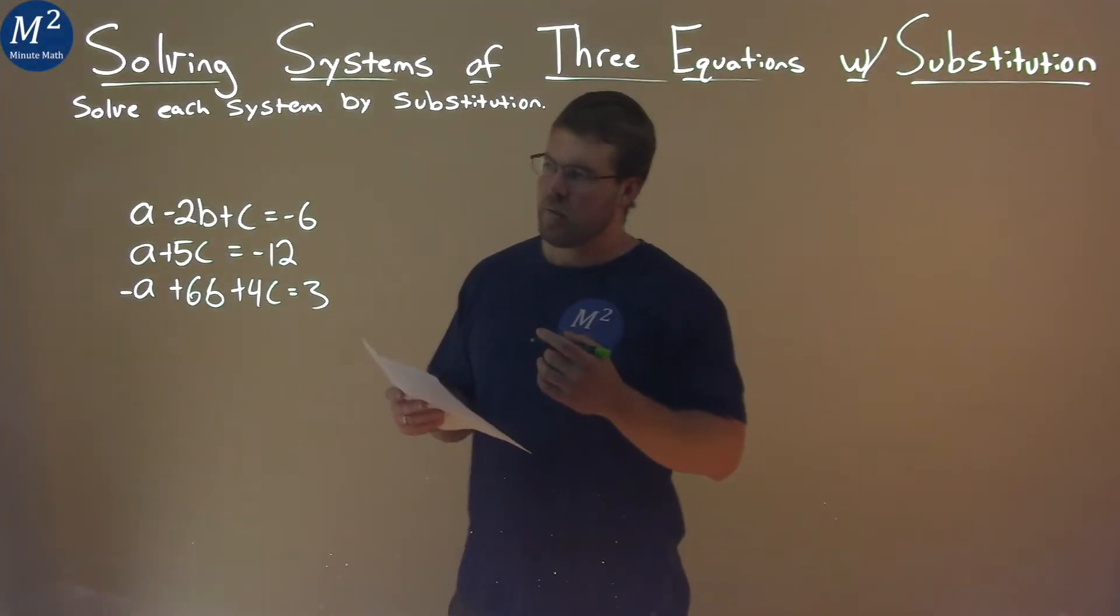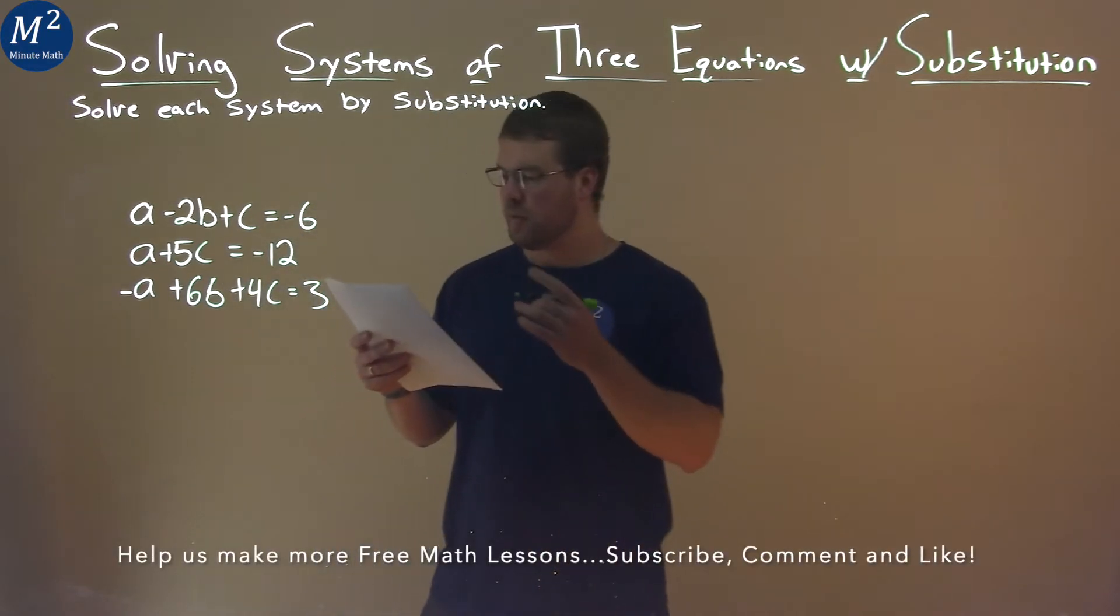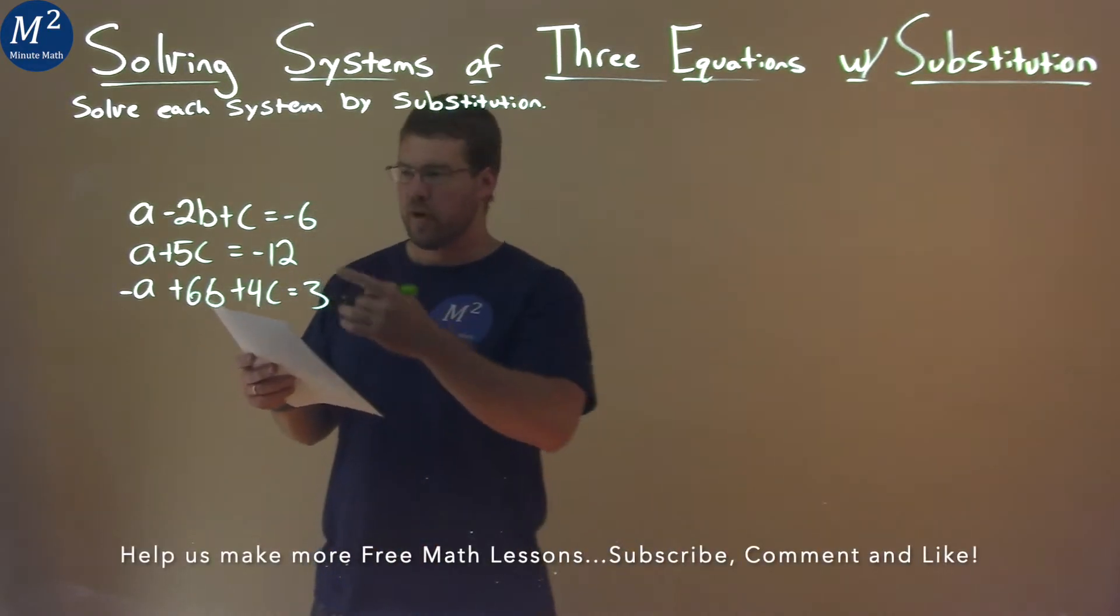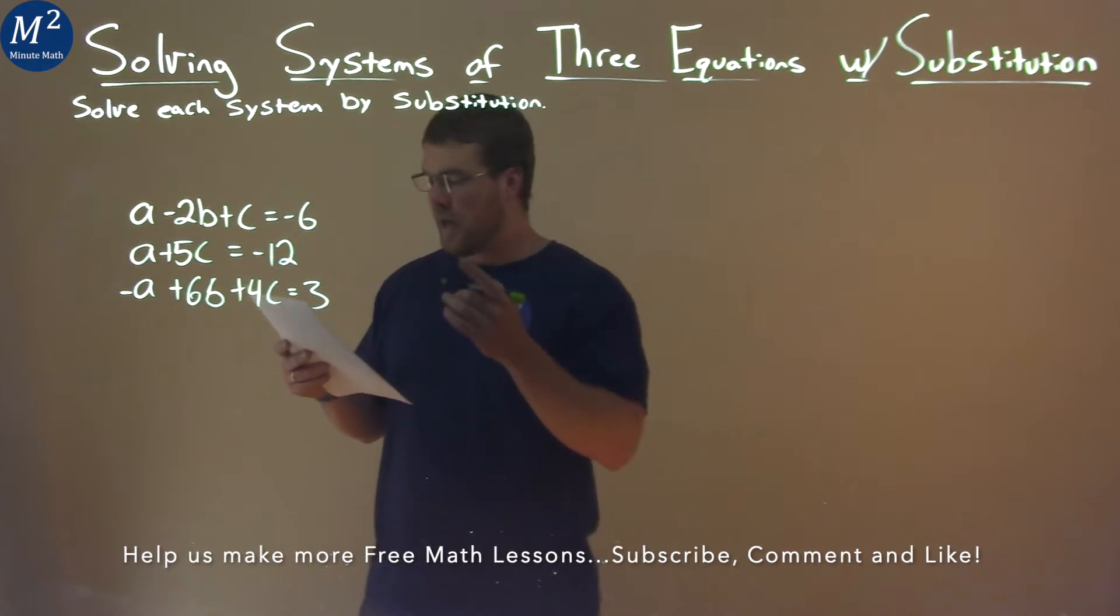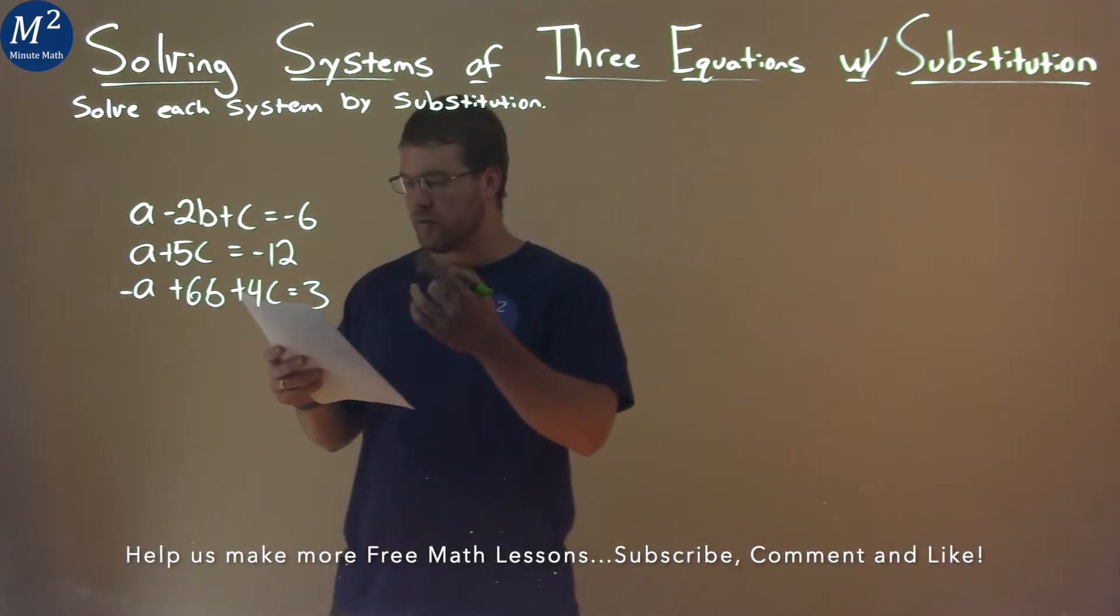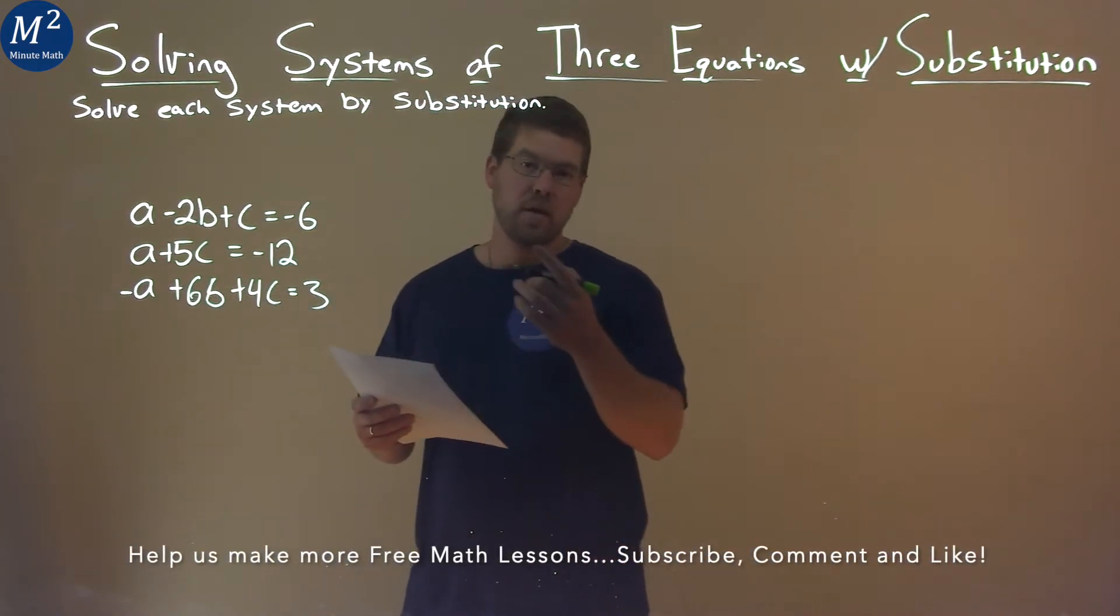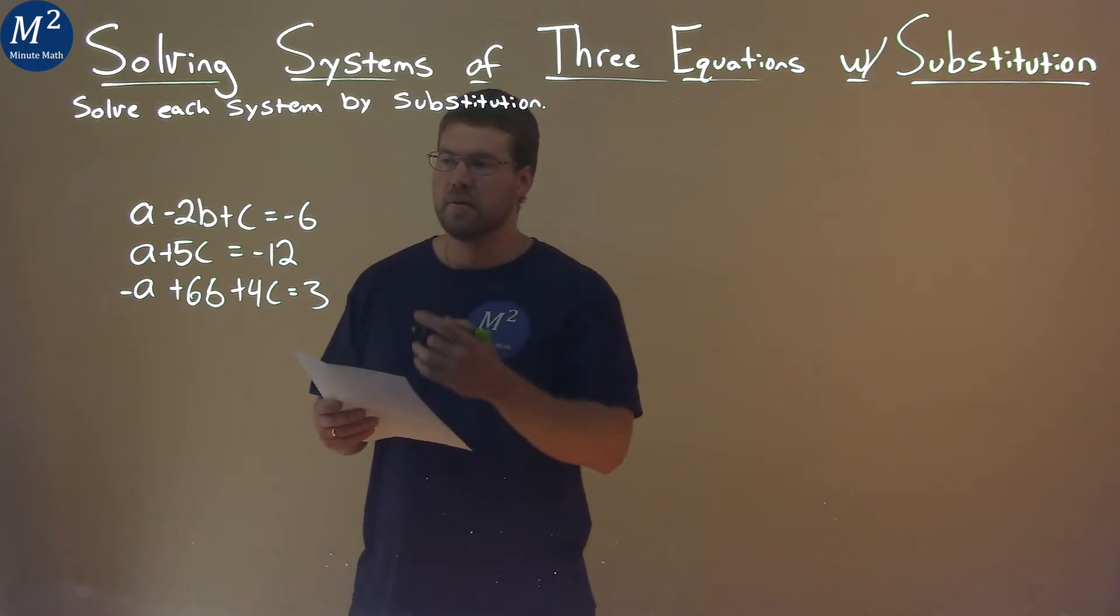We're given this problem right here. A minus 2B plus C equals negative 6. A plus 5C equals negative 12. And negative A plus 6B plus 4C equals 3. And we need to solve the system by substitution.